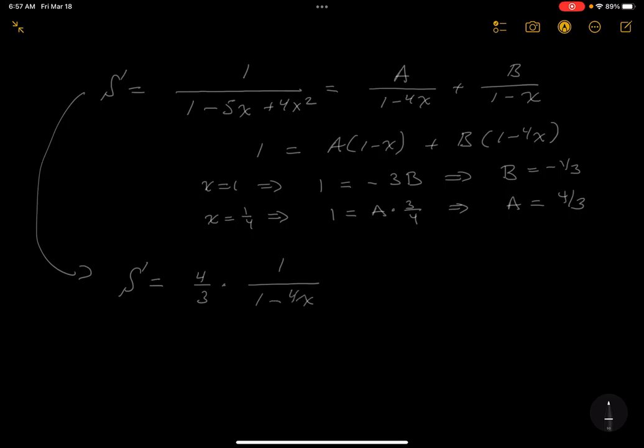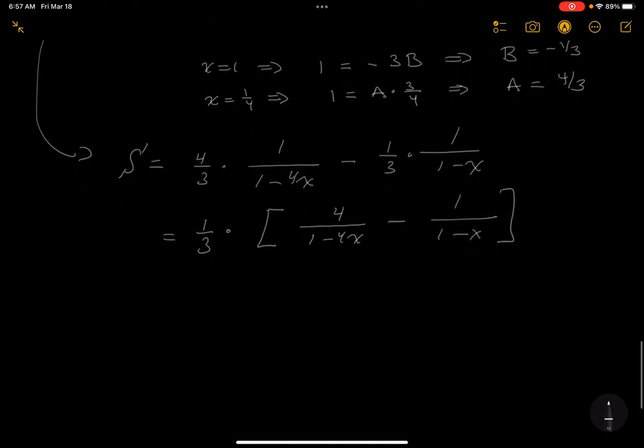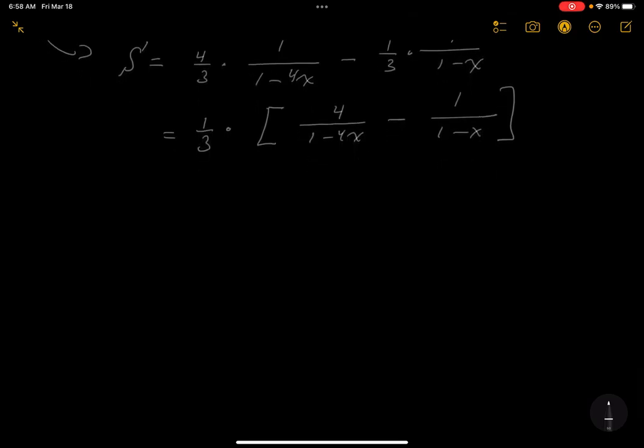S is equal to, well, what's the A? The A is 4 thirds. So I'll write this as 4 thirds times 1 over 1 minus 4X. And the B is minus 1 third, right? So minus 1 third, and you're left off with 1 over 1 minus X. All right. So let's keep moving. And I've got to write down the pattern that I'm seeing. And this is always difficult, but you know what I'm going to do? So I'm going to factor out a 1 third. And there's a reason to that.